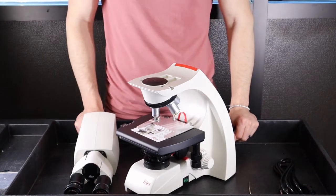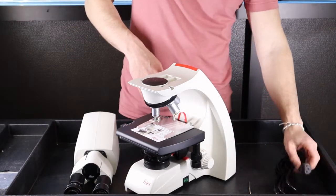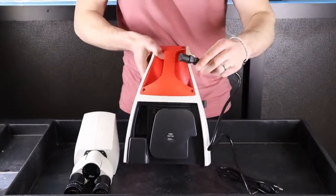This video will show you how to set up your Leica DM750 microscope. First step is to plug in the power cable to the back of the microscope.